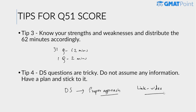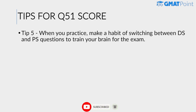The fifth tip: when we practice, we tend to do only DS questions or only PS questions at one go, because that's how questions are arranged in question banks and books. But in the actual exam, a DS question is followed by a PS question and then back to DS — they alternate. Our brain is not accustomed to switching between DS and PS, and since they require very different approaches, it takes time to settle into each one.